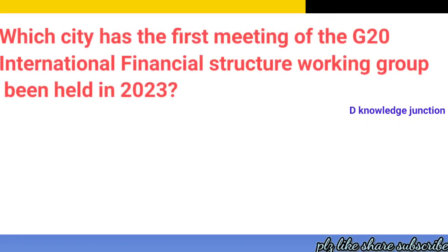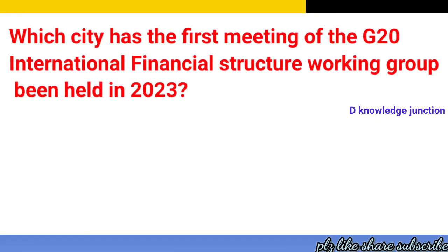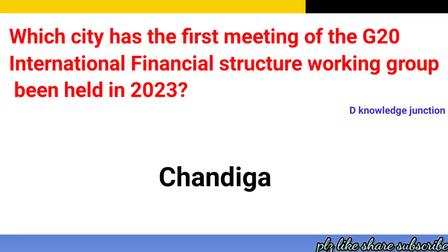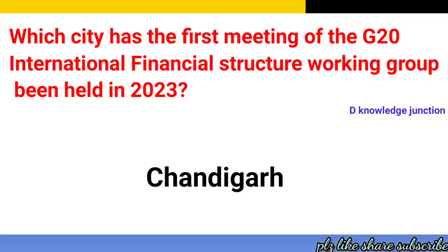Which city has the first meeting of the G20 International Financial Structure Working Group been held in 2023? The correct answer is Chandigarh.